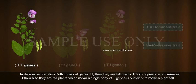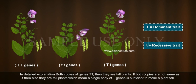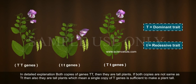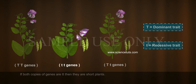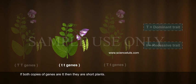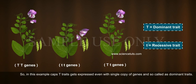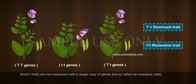In detailed explanation: if both copies of genes are TT, then they are tall plants. If both copies are not same, as in T and t, then also they are tall plants, which means a single copy of the T gene is sufficient to make a plant tall. If both copies of genes are tt, then they are short plants. So, the T trait gets expressed even with a single copy of genes and so is called the dominant trait. The t trait is not expressed with a single copy of genes and so is called the recessive trait.